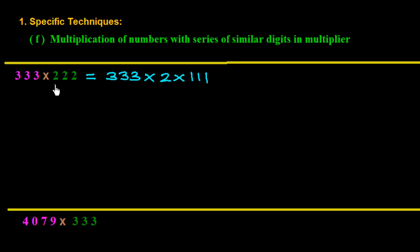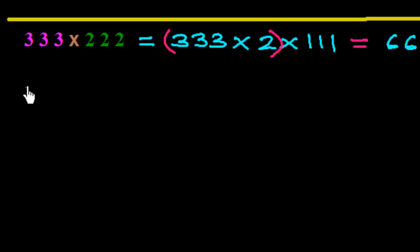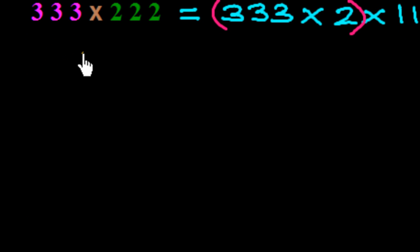We multiply 333 by 2 to get 666, so now we have 666 × 111. This connects to what we studied in the previous session — the multiplication of a number with a series of ones. Here the series has three digits, and the multiplier also has three digits.